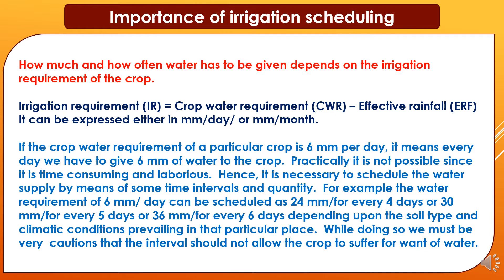For example, a water requirement of 6 mm per day can be scheduled as 24 mm every four days, or 30 mm every five days, or 36 mm every six days, depending on soil type and climatic conditions prevailing in that particular place. While doing so, we must be cautious that the interval should not allow the crop to suffer for want of water.